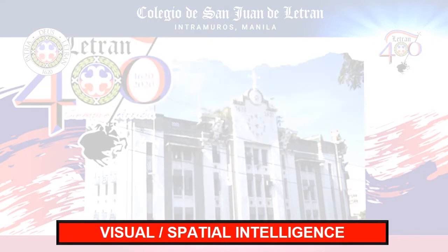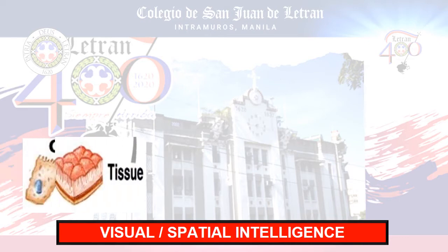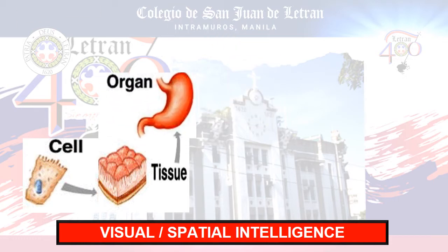A cell is composed of a group of organelles, which refer to small organs. Then, tissue is composed of a group of cells. Then, we have the stomach, which refers to an organ.